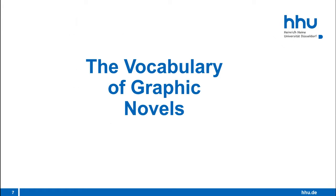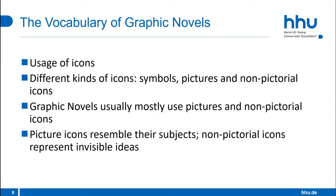The vocabulary of graphic novels consists of icons. Icons are any image used to represent a person, place, thing or idea. There are different kinds of icons: symbols, pictures, and non-pictorial icons. In graphic novels, pictures and non-pictorial icons are usually used. While picture icons are designed to resemble their subjects, non-pictorial icons represent invisible ideas.